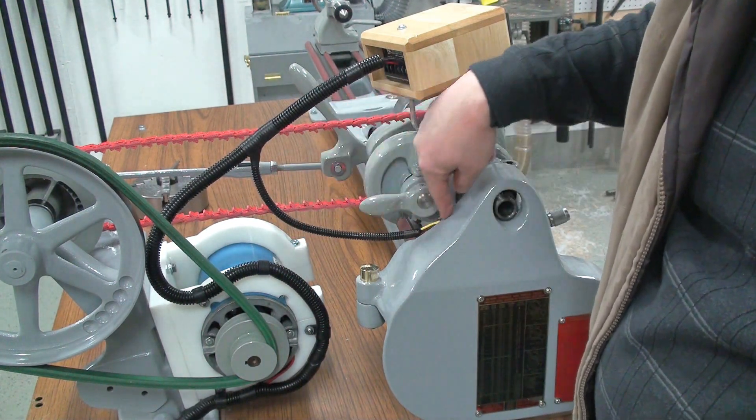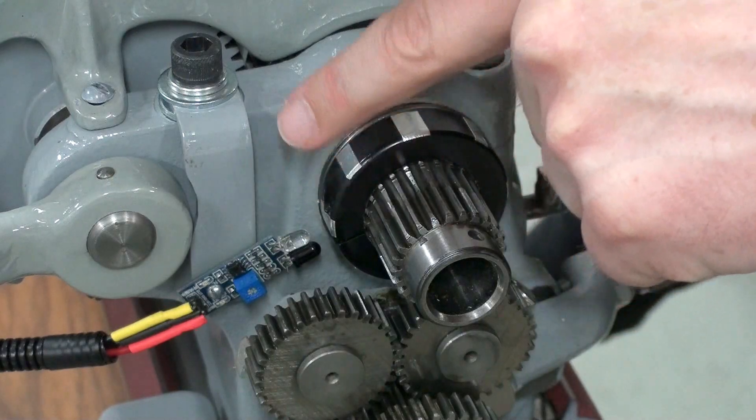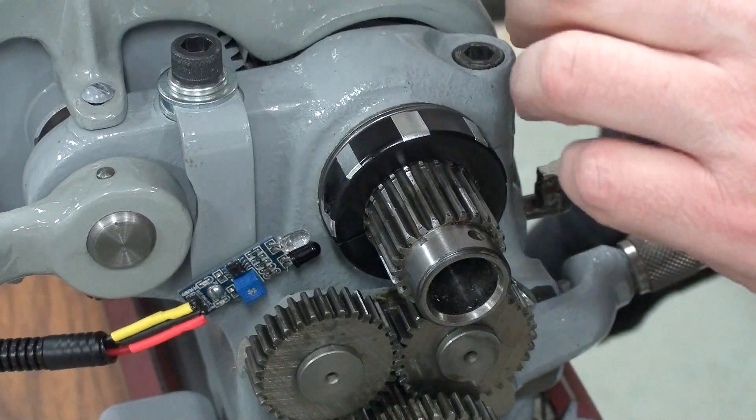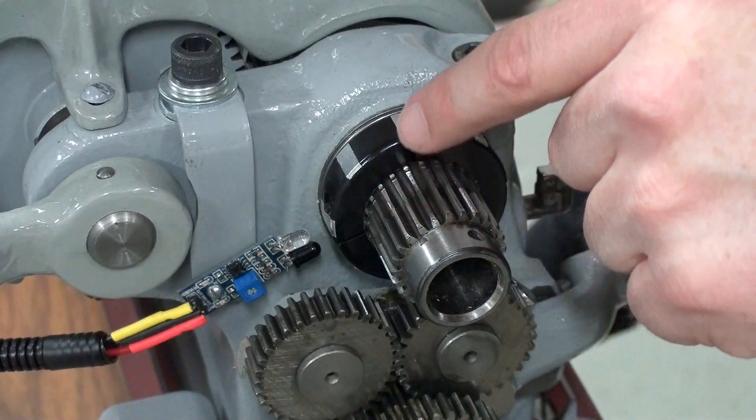Now the sensor is just a simple optical Arduino sensor. These cost anywhere from $1.50 to $3 a piece depending on where you buy it from.